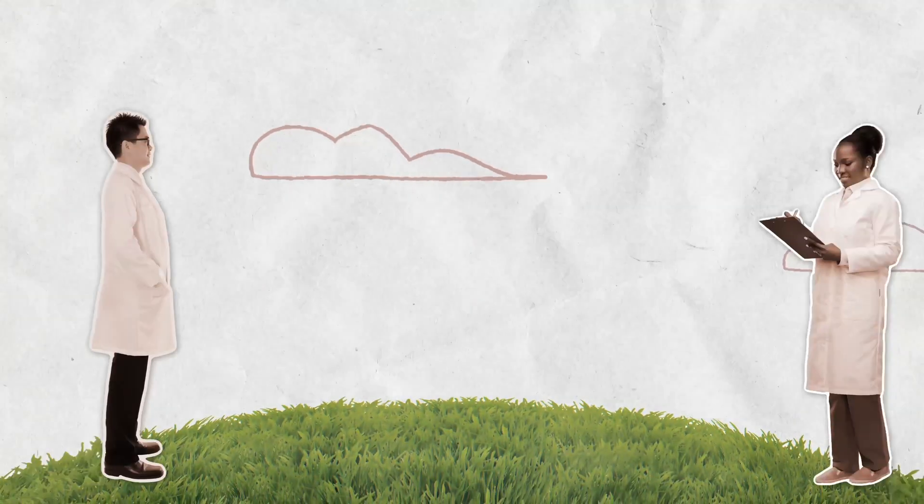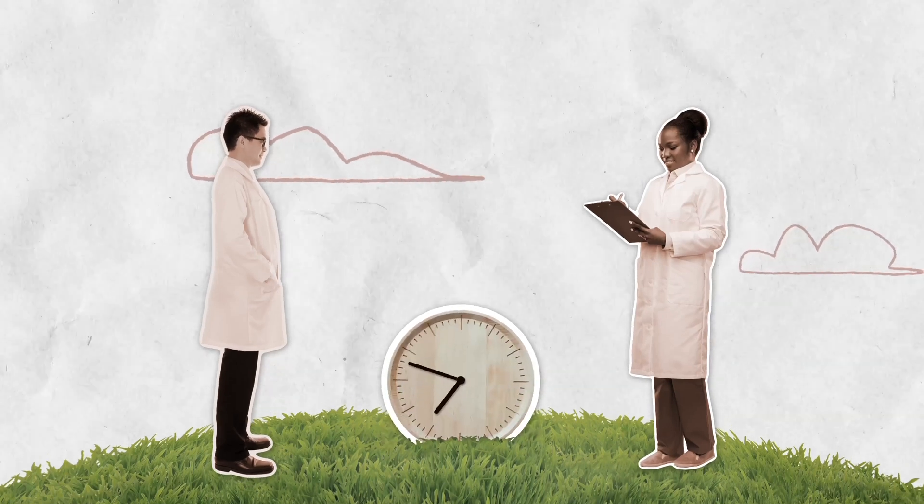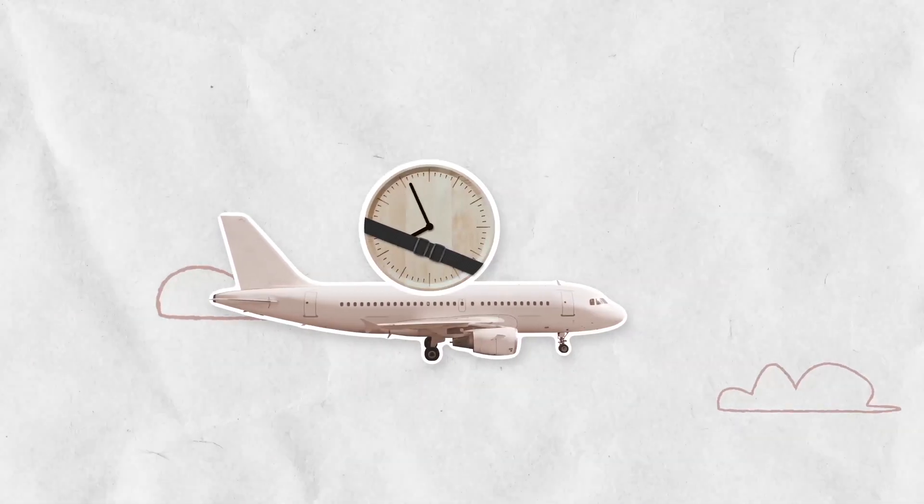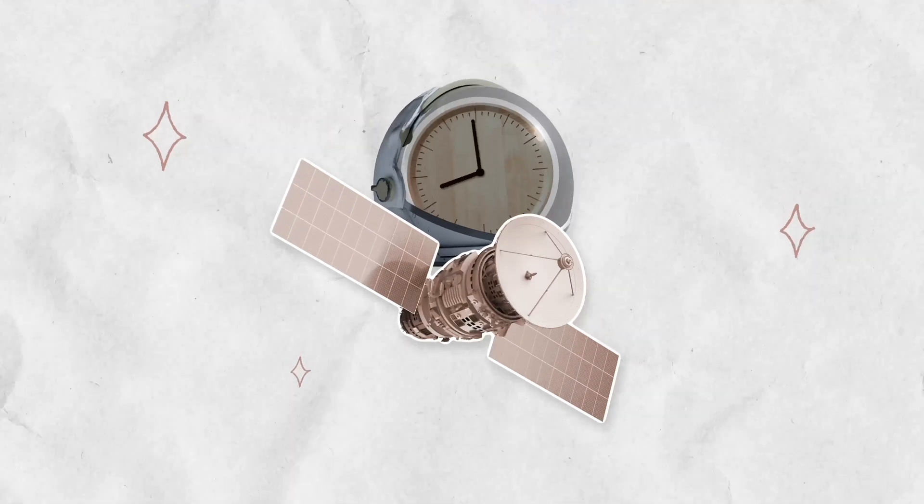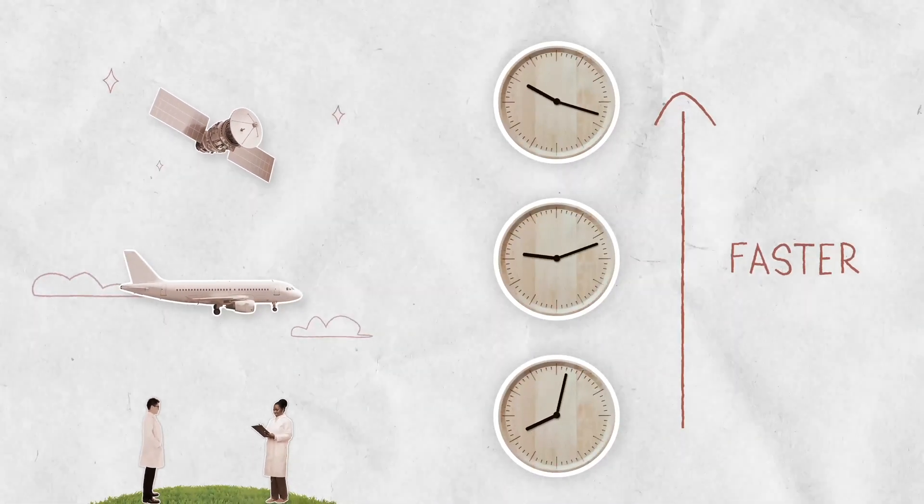This isn't the first time scientists have proven Einstein's theory. They have compared clocks on the ground to clocks on airplanes, then to clocks on satellites. The higher clocks went, the faster they ticked.